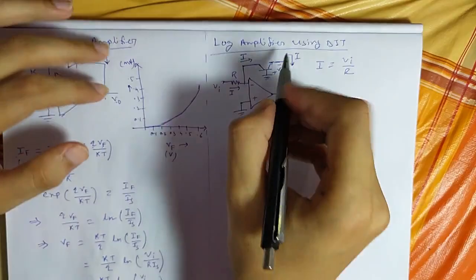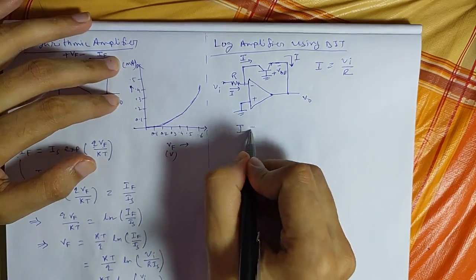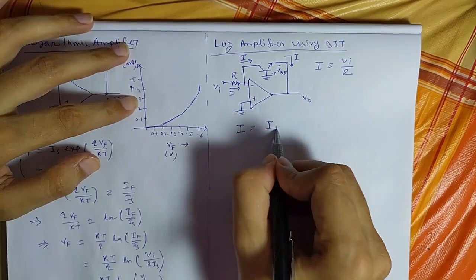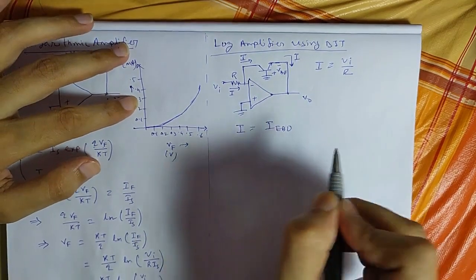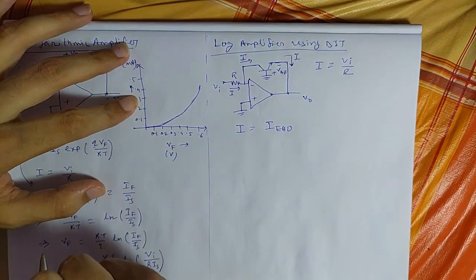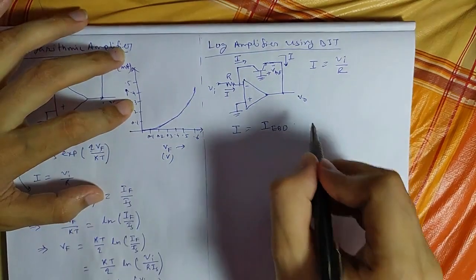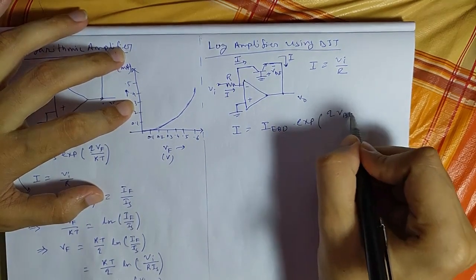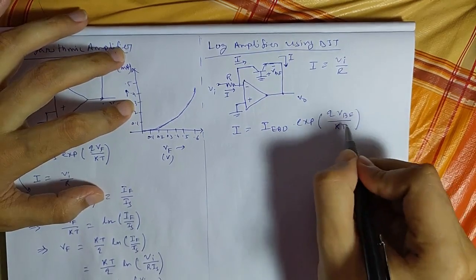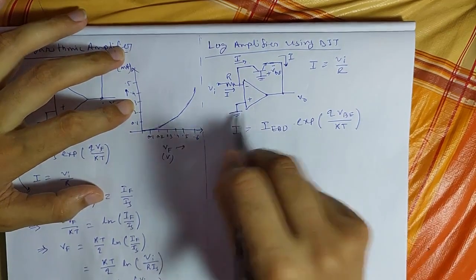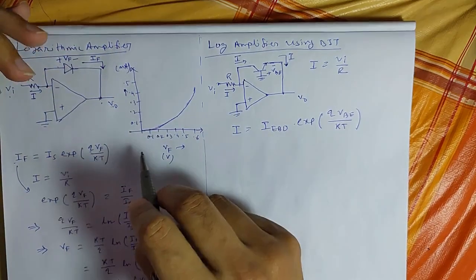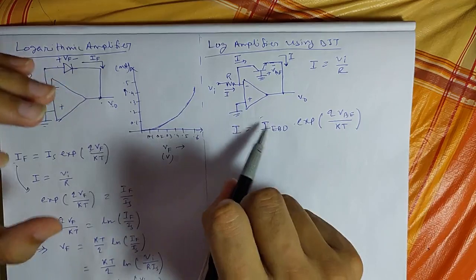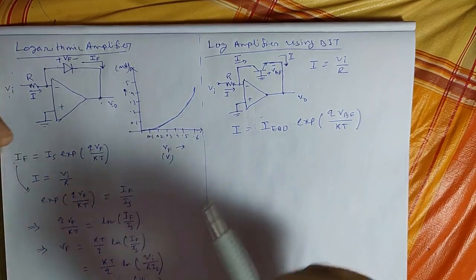In that case we can write that current I and this voltage VBE are related by I equals IEbo, which is the base-to-emitter reverse saturation current, times e to the power Q·VBE by KT. This expression is similar to the diode current-voltage relationship. This is the base-to-emitter junction reverse saturation current and that is the base-to-emitter junction potential.